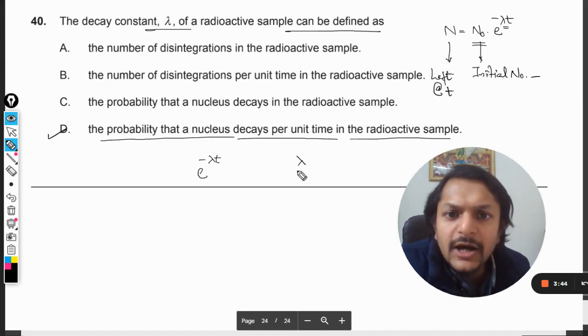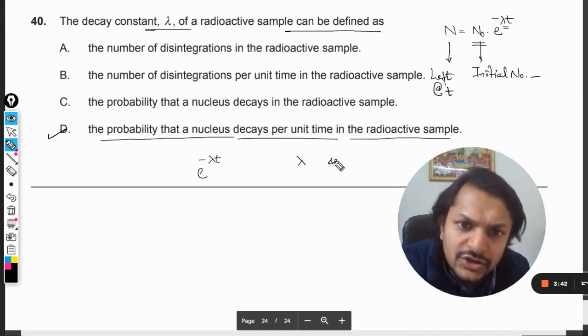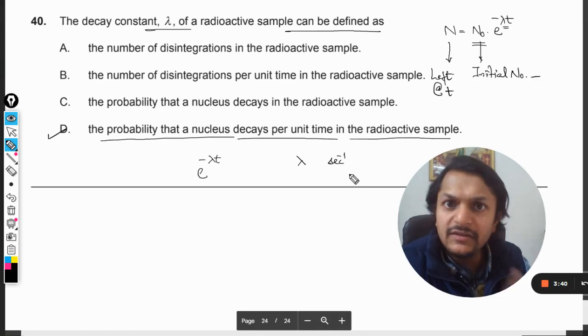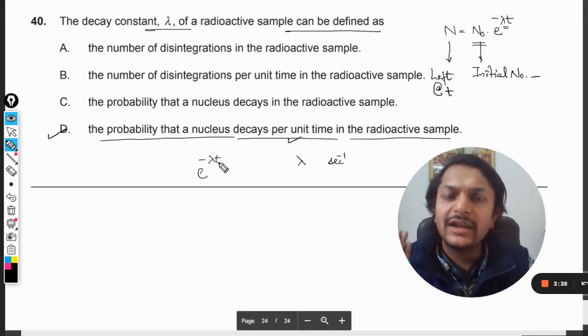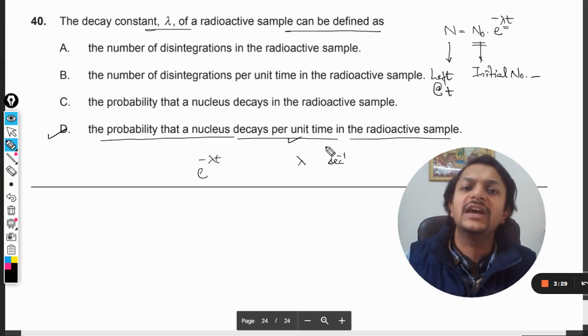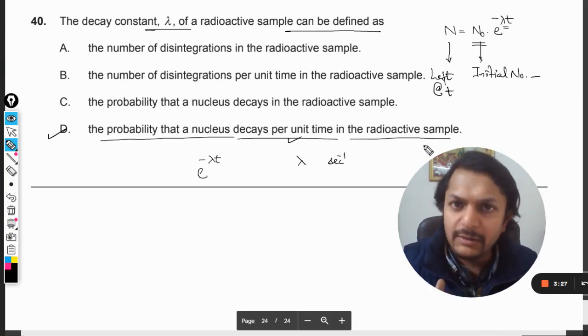So what should be the units of lambda? The units of lambda should be per second, isn't it? Per second. So there has to be per unit time, and we know that lambda does talk about the probability of the nucleus decay. So it will be probability of the nucleus decay per unit time in the radioactive sample.